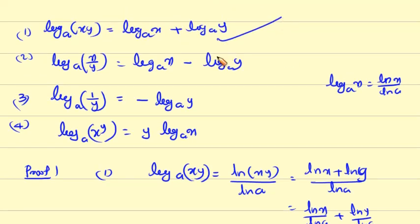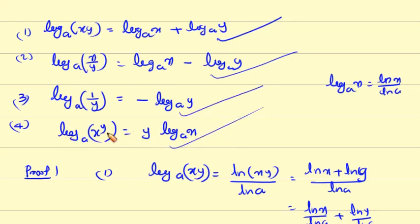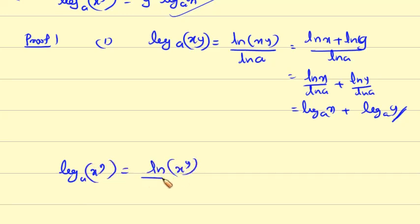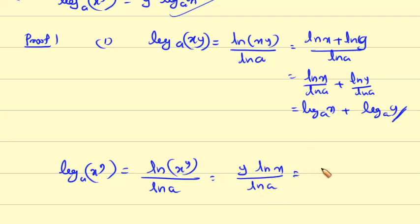Proof of property 4: log(x^y) to the base a equals ln(x^y) divided by ln a. Since ln(x^y) equals y·ln x, this becomes y times ln x over ln a, which equals y times log x to the base a.